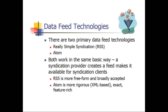There are two primary data feeds used in the market today: RSS (Really Simple Syndication) and Atom. They both work in the same manner — a syndication provider creates a feed and makes it available for syndication clients. An RSS feed is more free-form and broadly accepted. Atom is more detailed, XML-based, and feature-rich. For example, there are third-party social media applications that use an RSS feed to provide social media information to end users, or the New York Times has an iPhone app using an RSS feed to provide newspaper content. Atom would be utilized for CRM integration providing customer data, product data, or accessing a business process through an application.